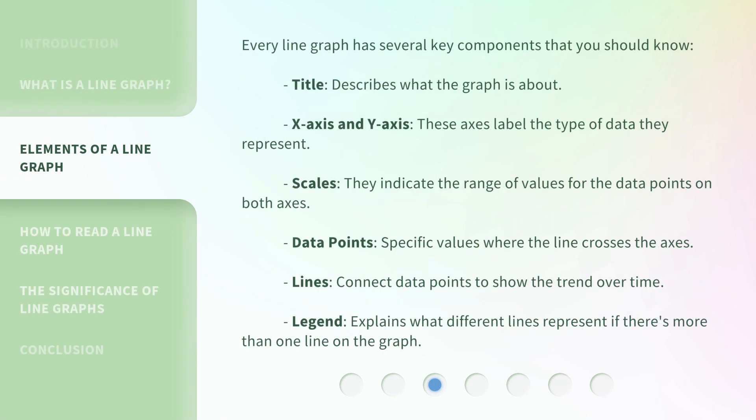Every line graph has several key components that you should know. Title: Describes what the graph is about. X-axis and Y-axis: These axes label the type of data they represent. Scales: They indicate the range of values for the data points on both axes. Data points: Specific values where the line crosses the axes. Lines: Connect data points to show the trend over time. Legend: Explains what different lines represent if there's more than one line on the graph.